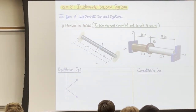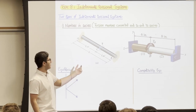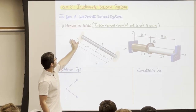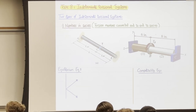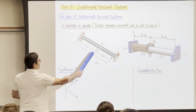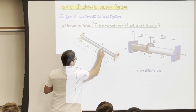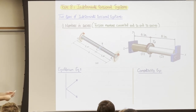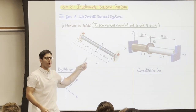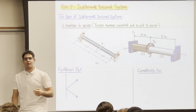Ask yourself first: why is this system indeterminate? We have an applied torque here, and we will have an unknown reaction at each support — one here and one there. We have two unknowns but only one equilibrium equation — summation of torsion at any point — so we can't find the two unknowns. That's why it's indeterminate.